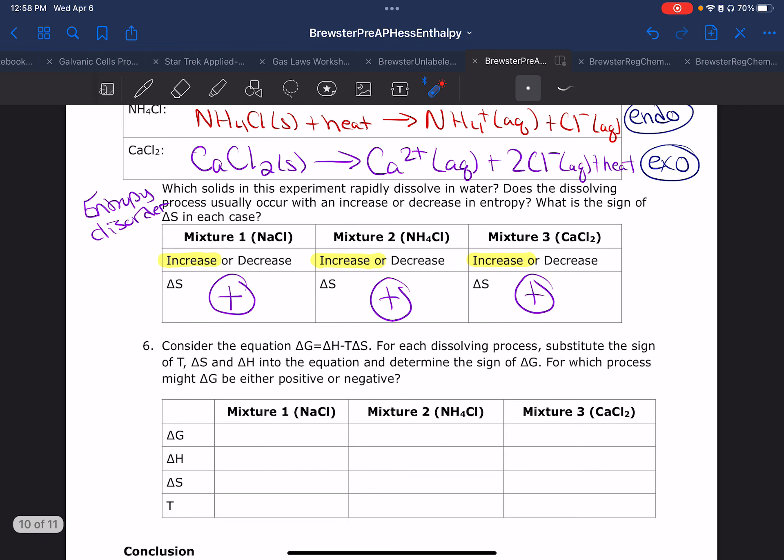So, mixture 1, 2, and 3, they all dissolved, which was the observation that we had earlier. Entropy means disorder. And so since I went from a solid substance into a liquid or aqueous substance, I've increased the disorder. And so my delta S is positive for all three.